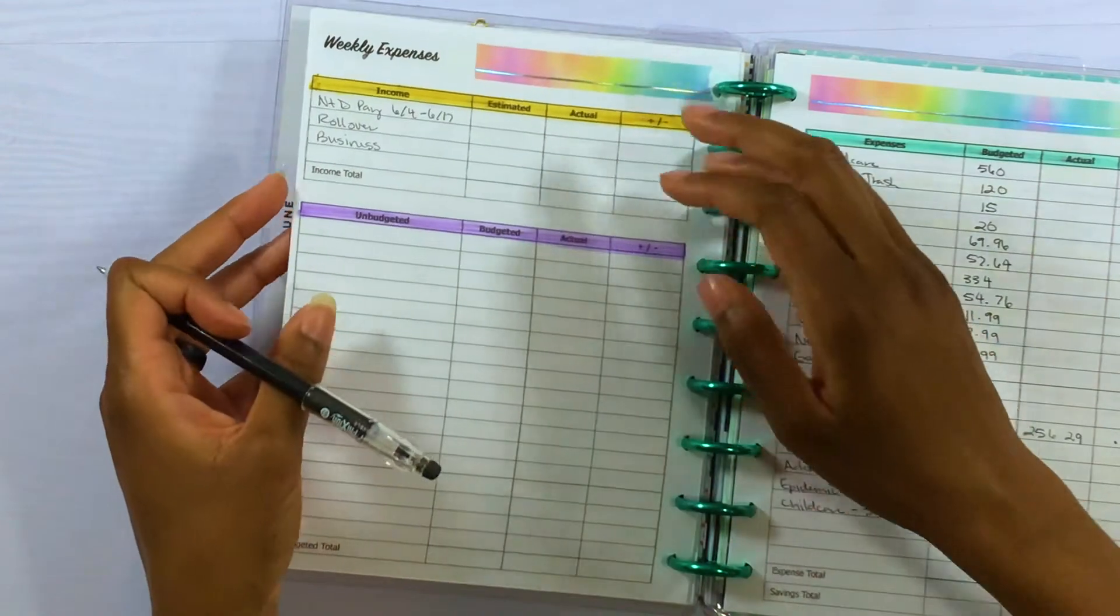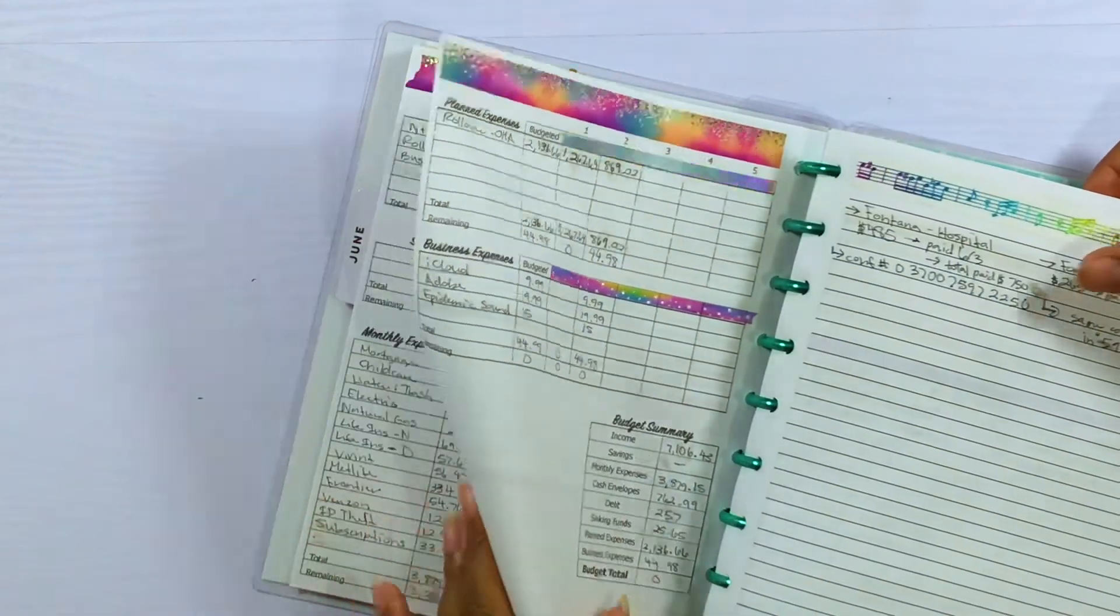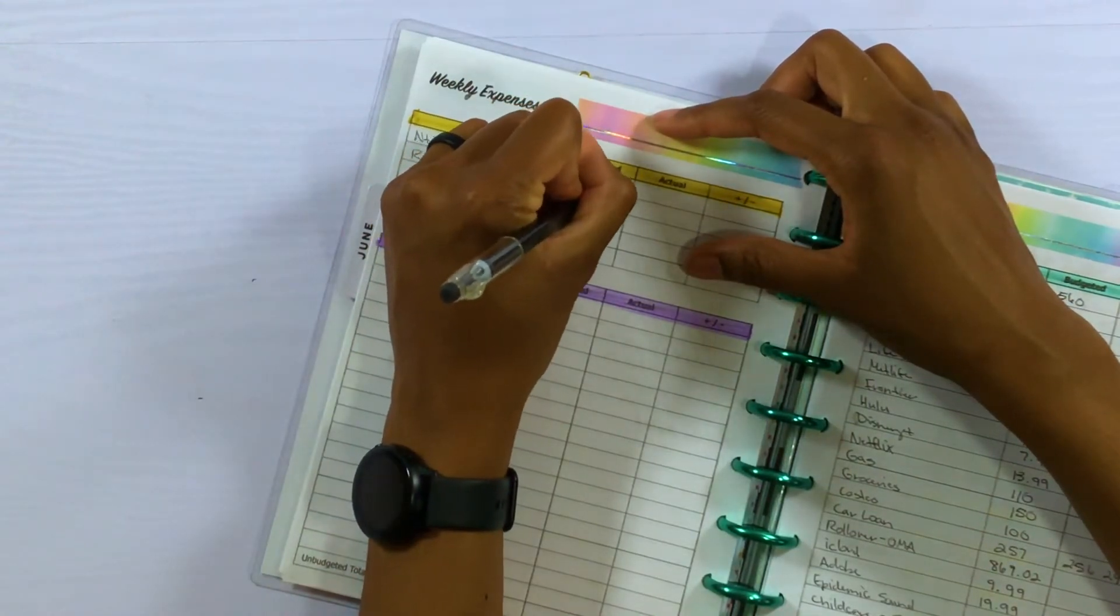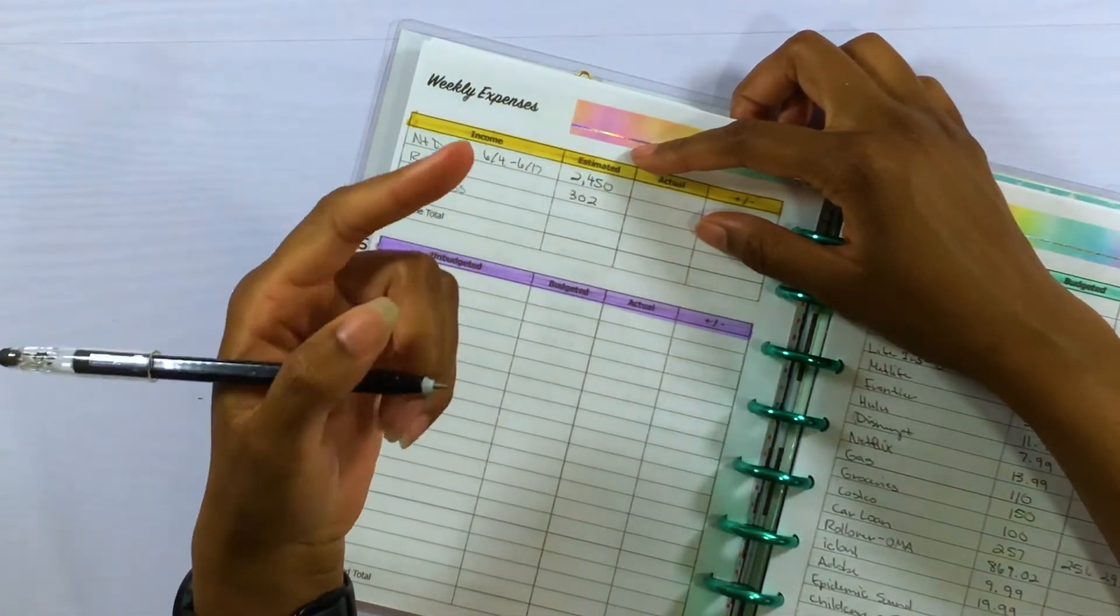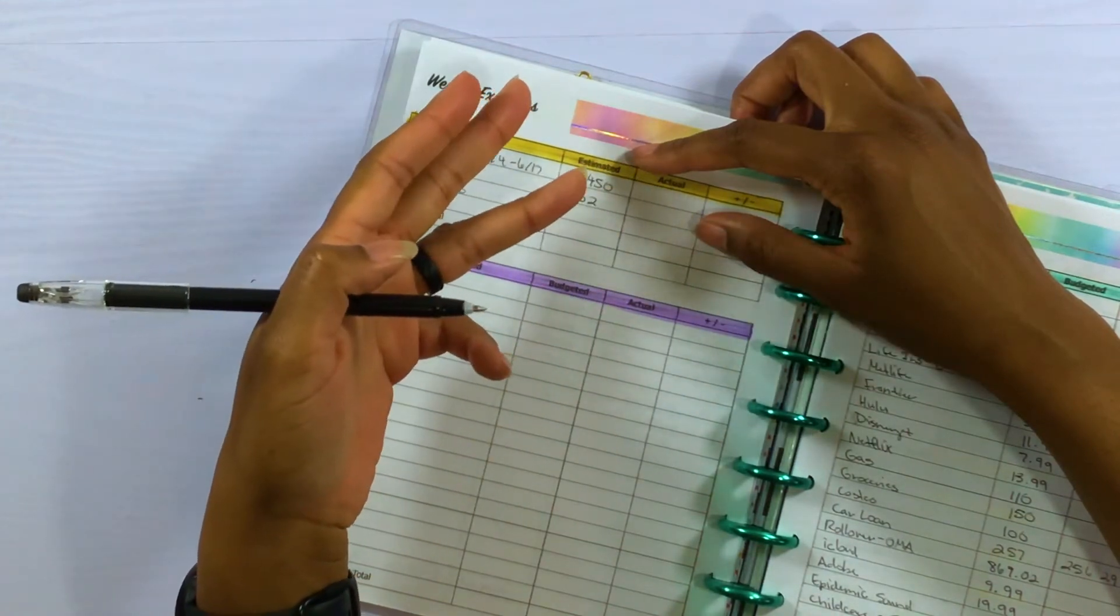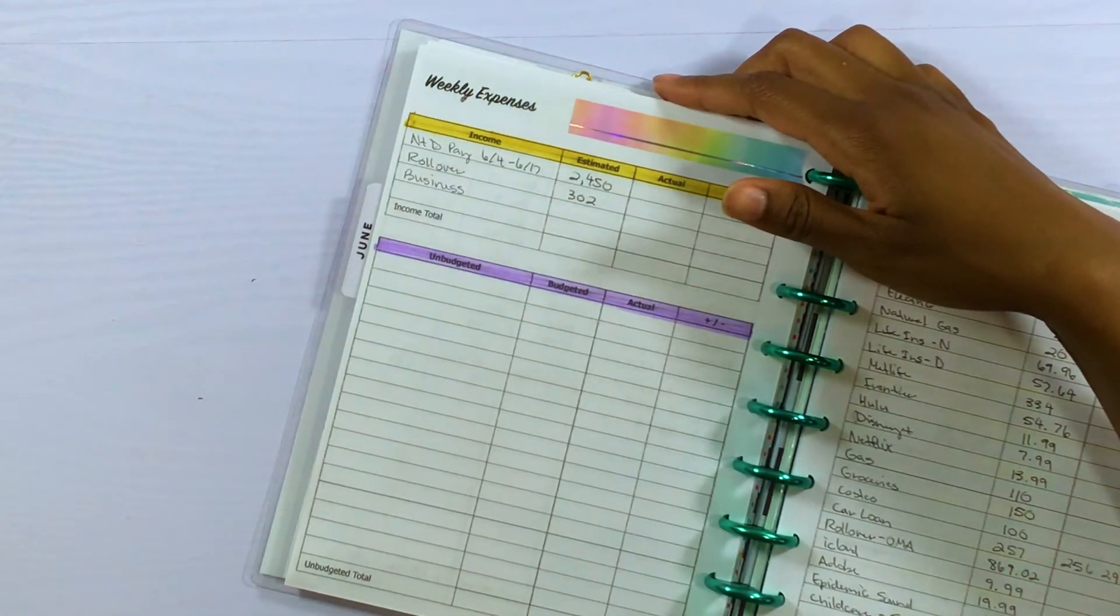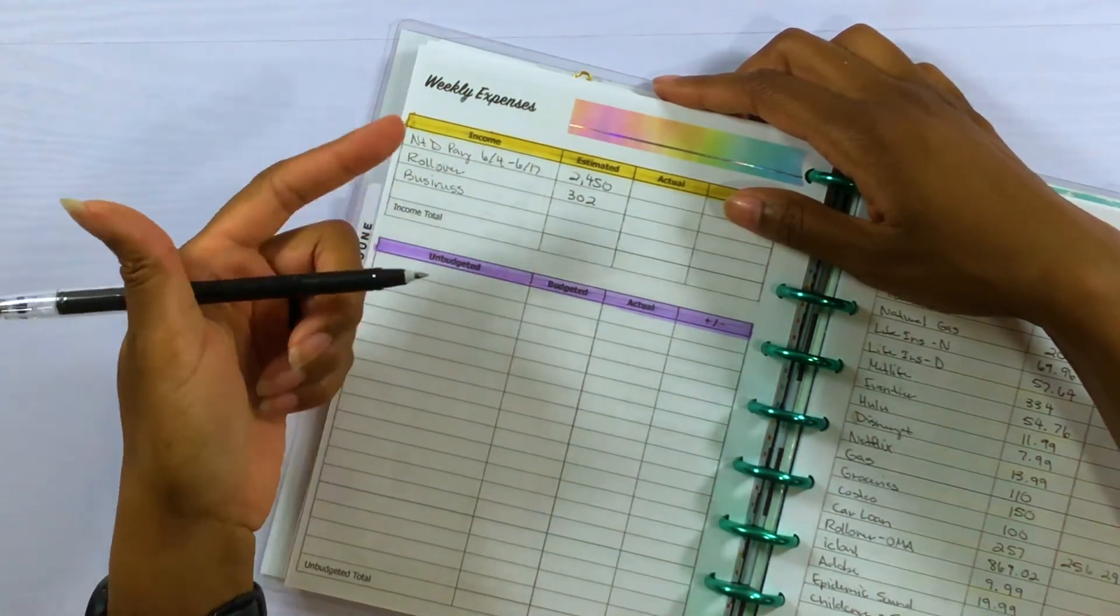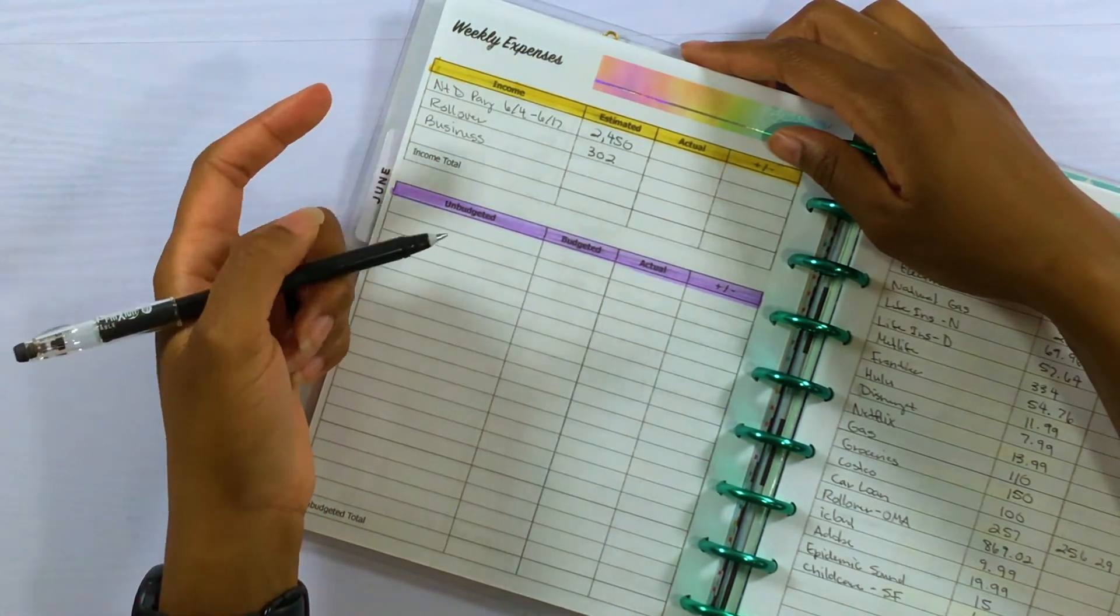So we're going to backtrack one more time and put in the expected income. So $2,450 for our take-home pay. Rollover is going to be $302 because I'm rolling over the money for our car insurance, our electricity bill and natural gas, because we did get California credits on those utilities, so we haven't been paying the actual bill. The credit has been paying the bills and the credit has been rolling over a couple of months.